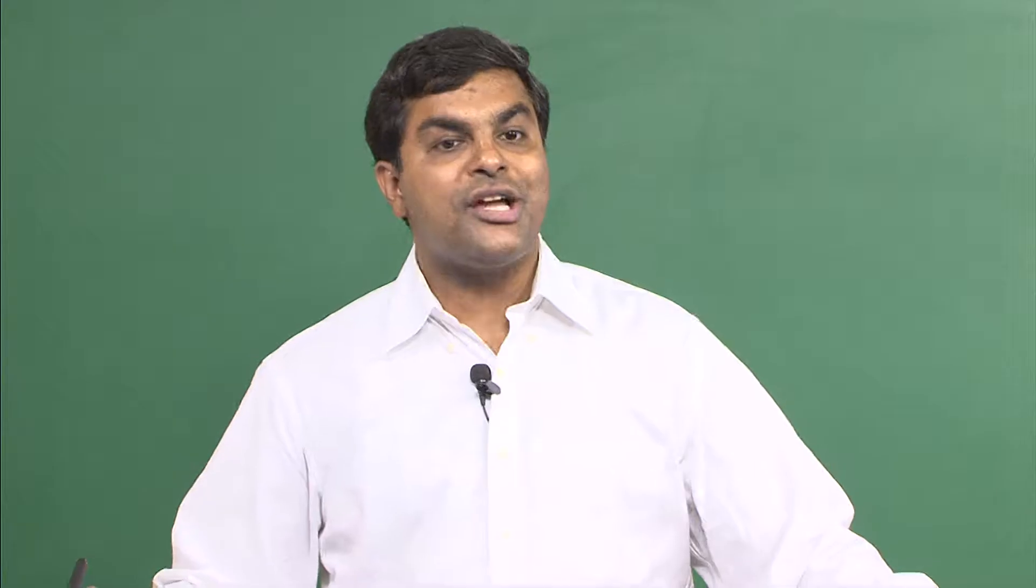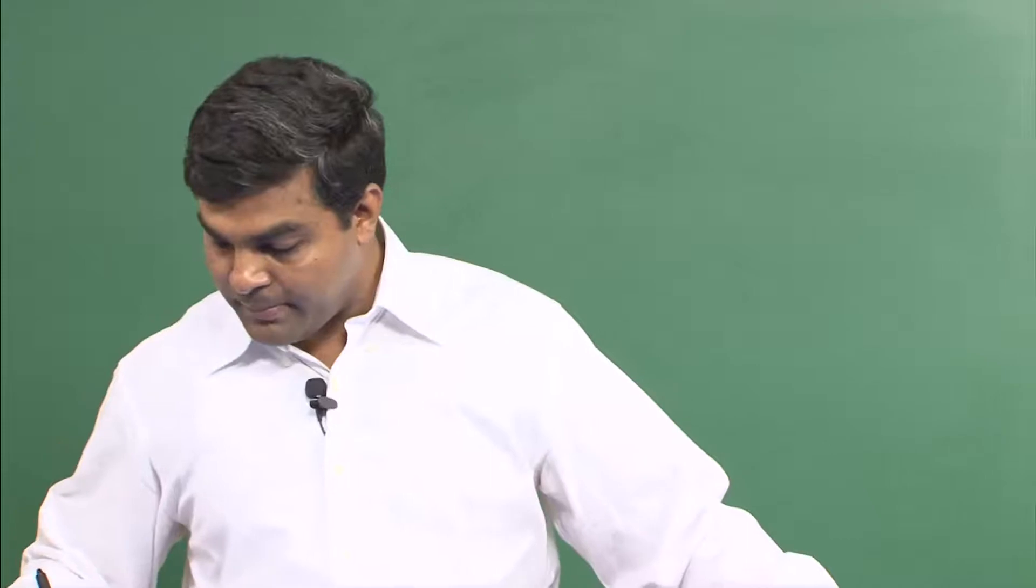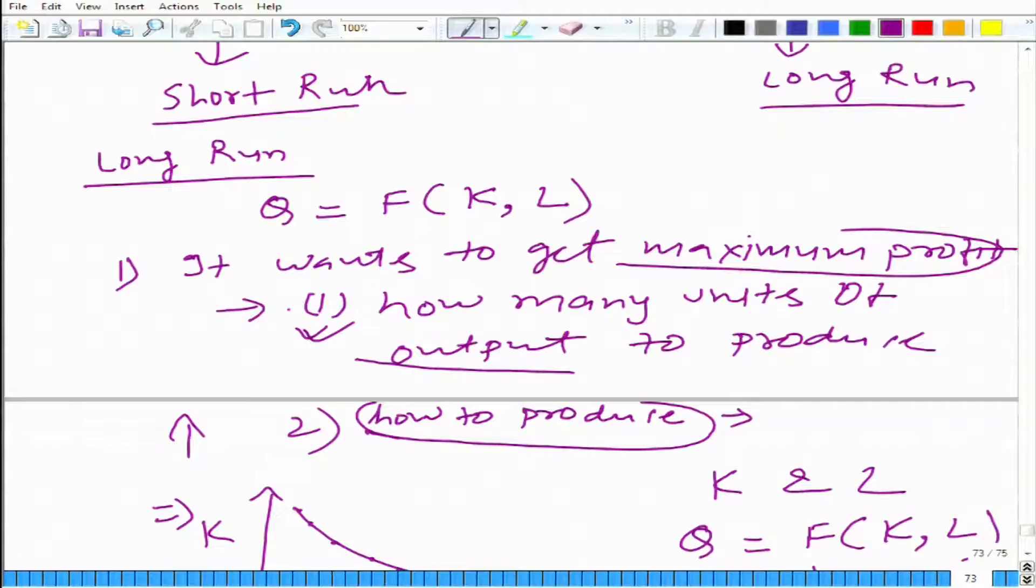We have already talked about minimizing the cost. So the mathematical problem is minimize r*k plus w*l. Minimize with respect to what? Not with respect to output, output is already fixed. We said that these are the three things: maximize profit, how many units of output to produce. We have already decided here that q₀ units of output to produce.